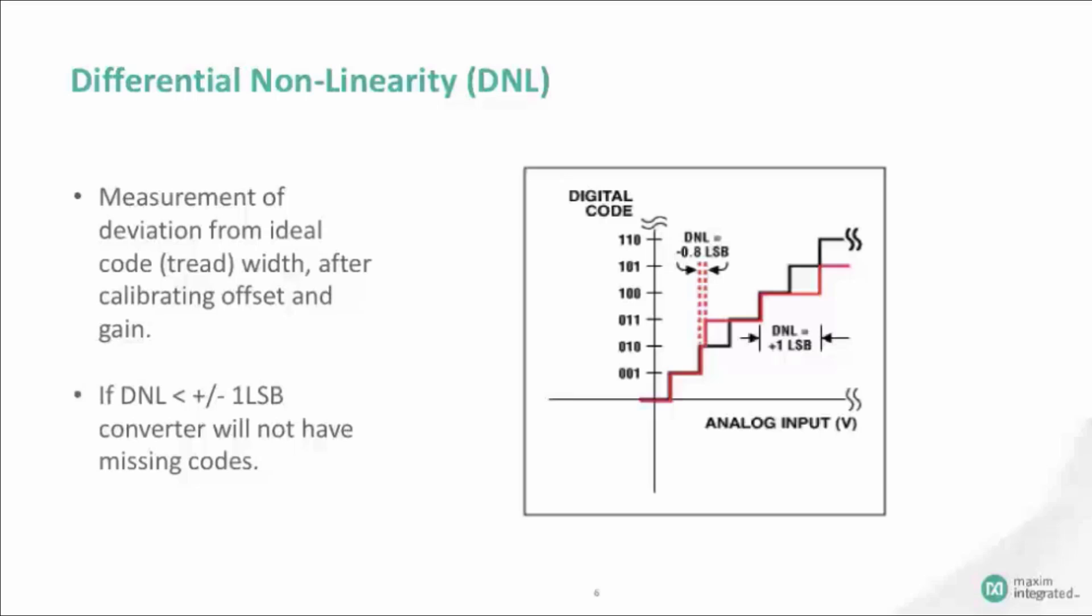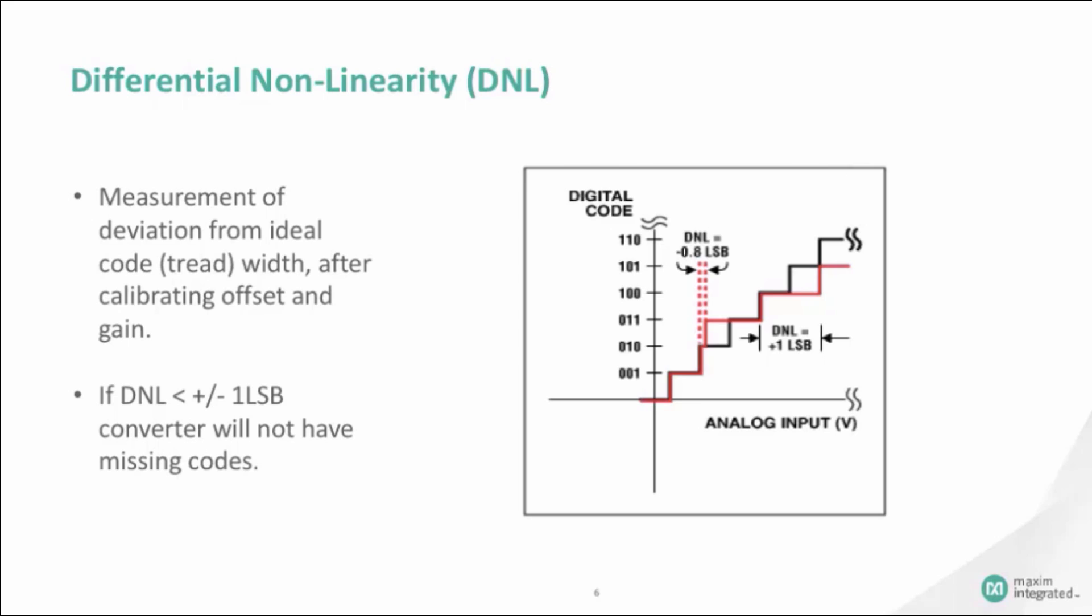In an ideal analog to digital converter, every step change is an LSB, or least significant bit. As mentioned in the previous slide, it is the maximum input voltage divided by 2 to the power of N, where N is the resolution of the ADC. Any deviation from this ideal step is called differential non-linearity. In an ADC, if this error is less than ±1 LSB, then the ADC will not have missing codes. Unlike other errors such as offset or gain, this error cannot be calibrated out.